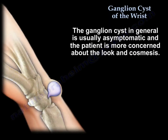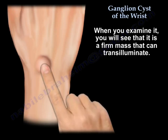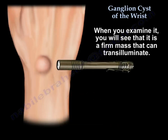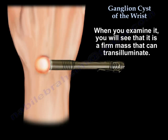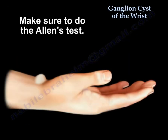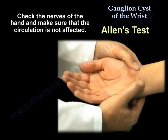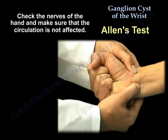The ganglia in general is usually asymptomatic, and patients are usually concerned about the look and cosmesis. On examination, it is a firm mass and it can transilluminate. Make sure you do an Allen test, check the nerves of the hand, and make sure the circulation is not affected.